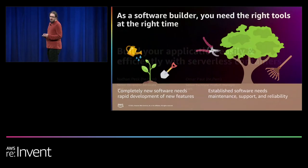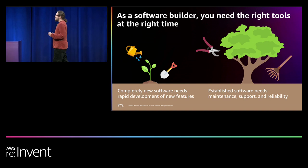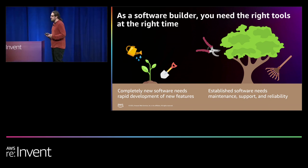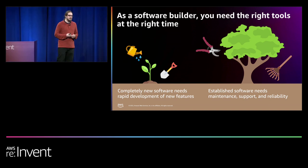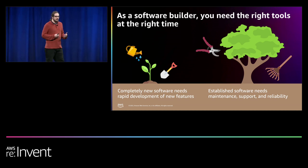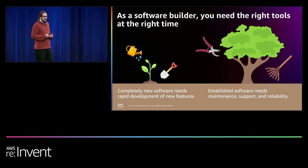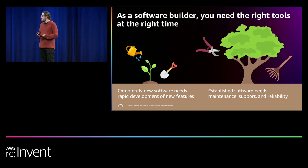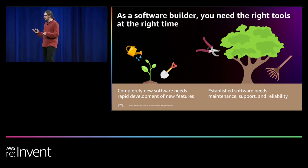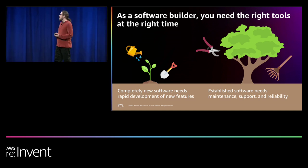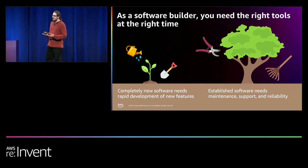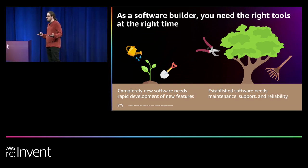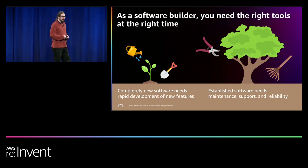To kick things off, I want to introduce an idea I've developed over years of software development at different startups: as a software builder, you need the right tools at the right time. Similar to growing things — if I use a watering can on a full-grown tree, it's not going to do much. Likewise, if I use a rake on a tiny baby plant, it's probably just going to kill that plant. I need the right tools for the life cycle.